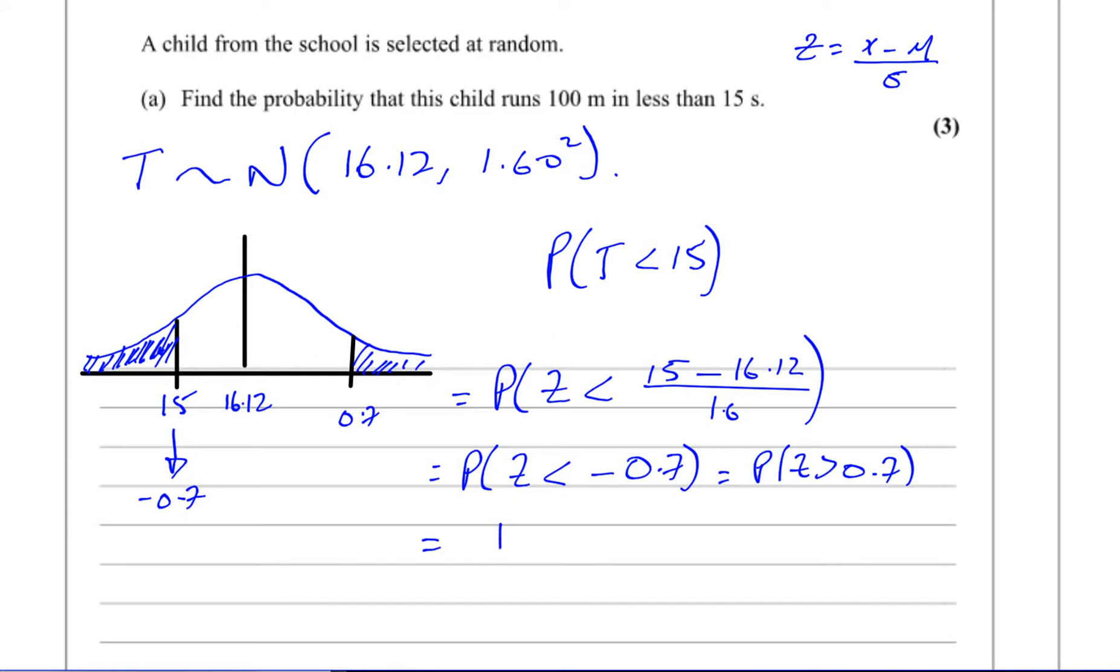So we need 1 minus the probability that z is less than 0.7. That's basically what we need.